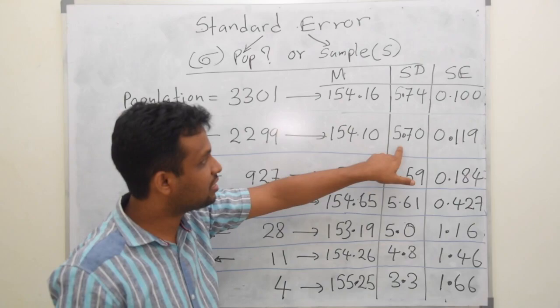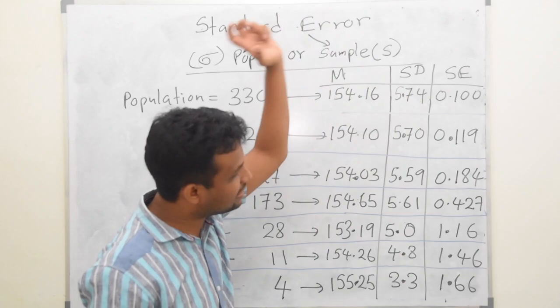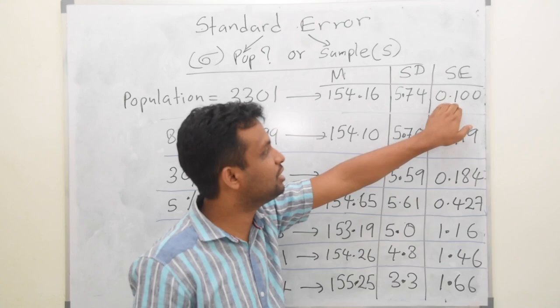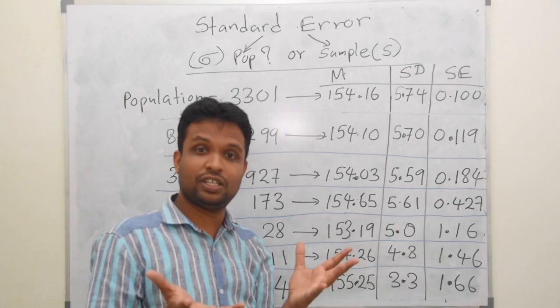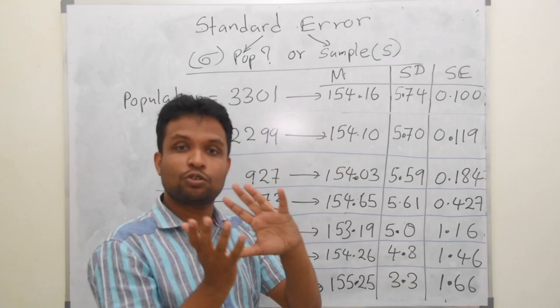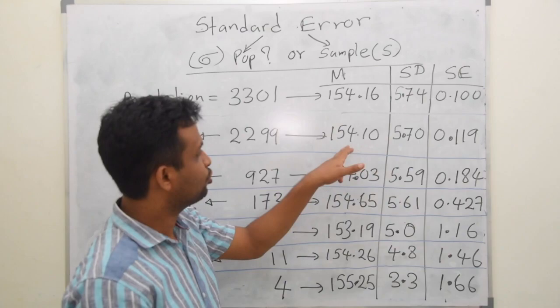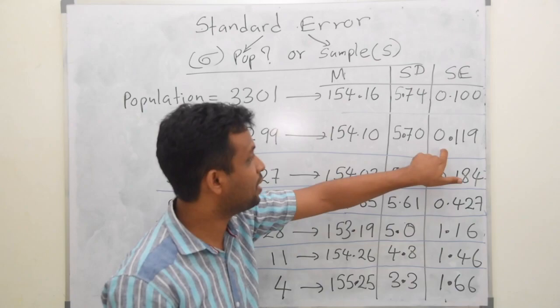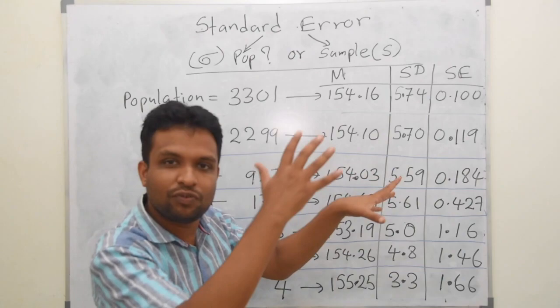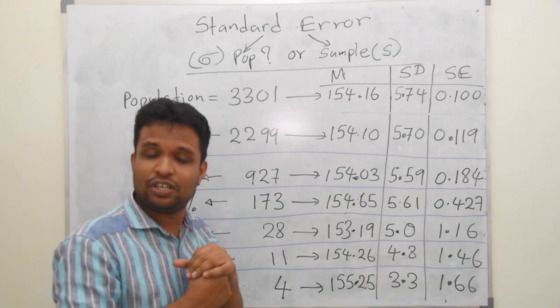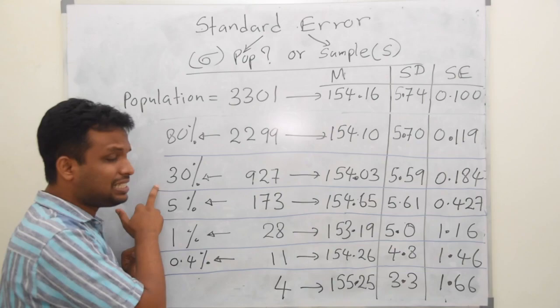It's not deviated much. Look at the standard deviation — it is almost the same as the population, but slightly less. Look at the standard error — it's slightly higher, but only a bit. When you calculate the 95% confidence interval, assuming standard normal distribution, that's mean plus or minus 1.96 standard errors: 154.1 plus or minus 2 times this value, giving approximately 154 to 154.3 — a very small range. We are very confident after taking 80%.